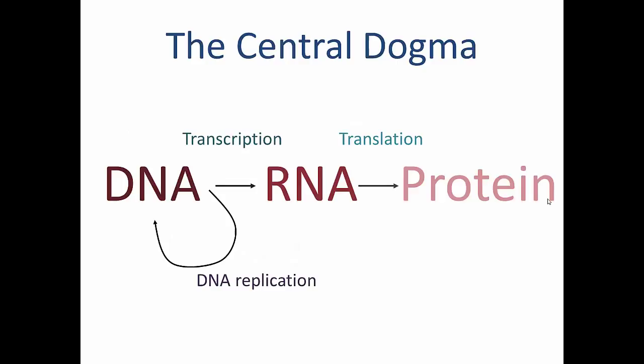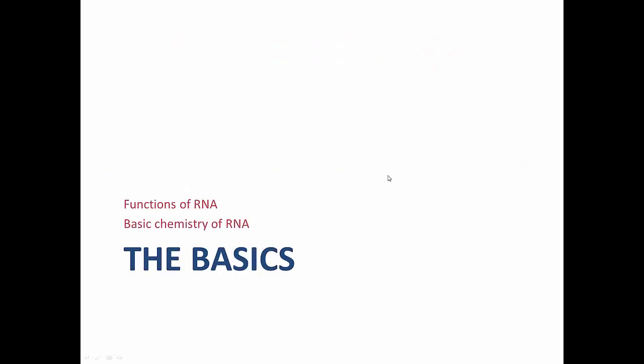As mentioned in the DNA lecture last week, the central dogma of molecular biology is set out as follows. The template DNA is capable of its own replication, or of being transcribed to RNA. The RNA molecule can then be translated to protein, and the protein can carry out functions within the cell. Today we'll be looking at the processes of transcription and translation.